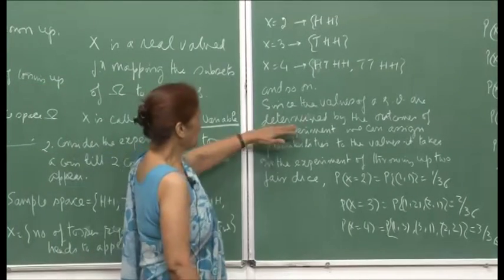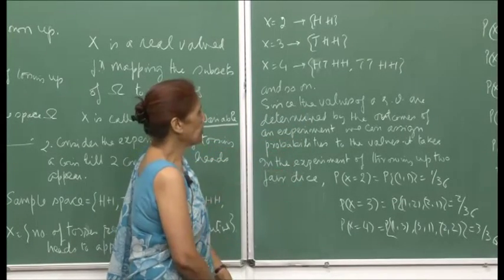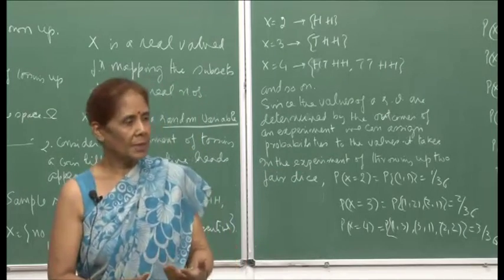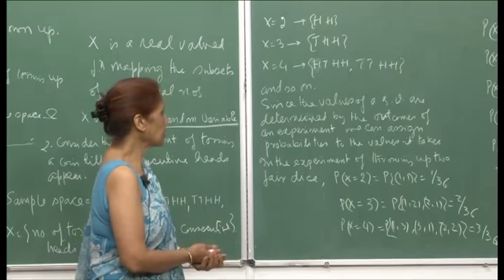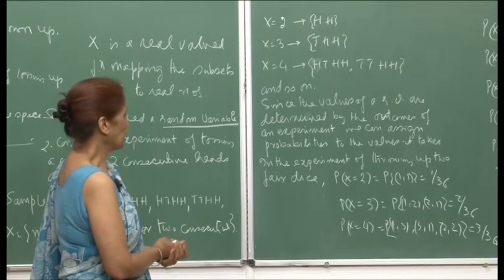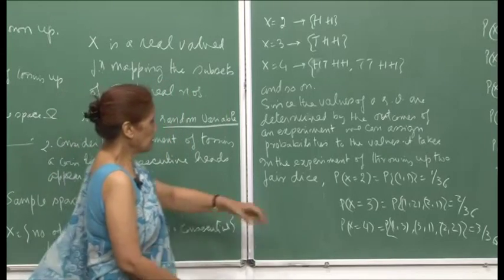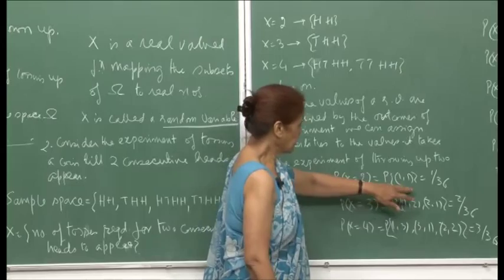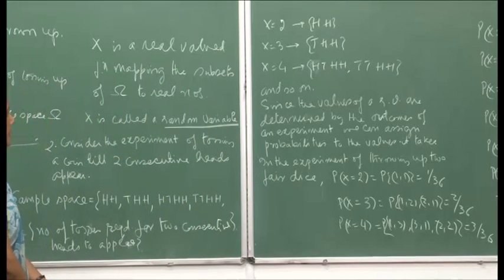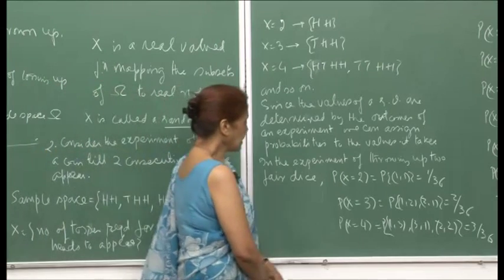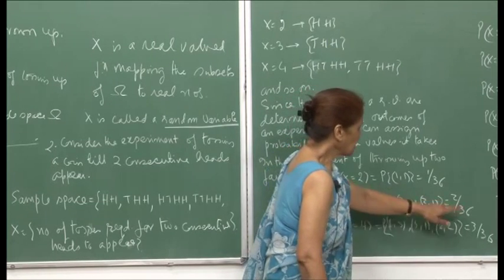Since the values of a random variable are determined by the outcome of an experiment, we can assign probabilities to the values it takes, because there are probabilities associated with the outcomes of the sample space. Since the random variable is mapping subsets or events from the sample space to real numbers, I can assign probabilities. For example, when throwing 2 fair dice, probability x equals 3 corresponds to the subset containing pairs (1,2) and (2,1), so this will be 2 by 36.